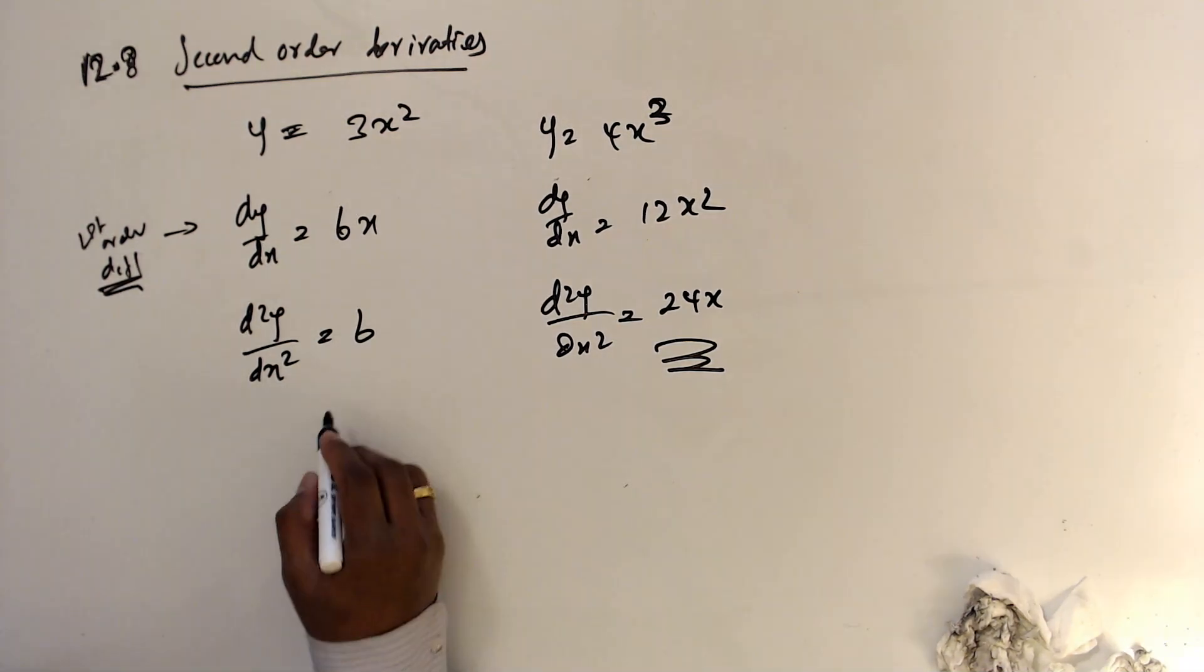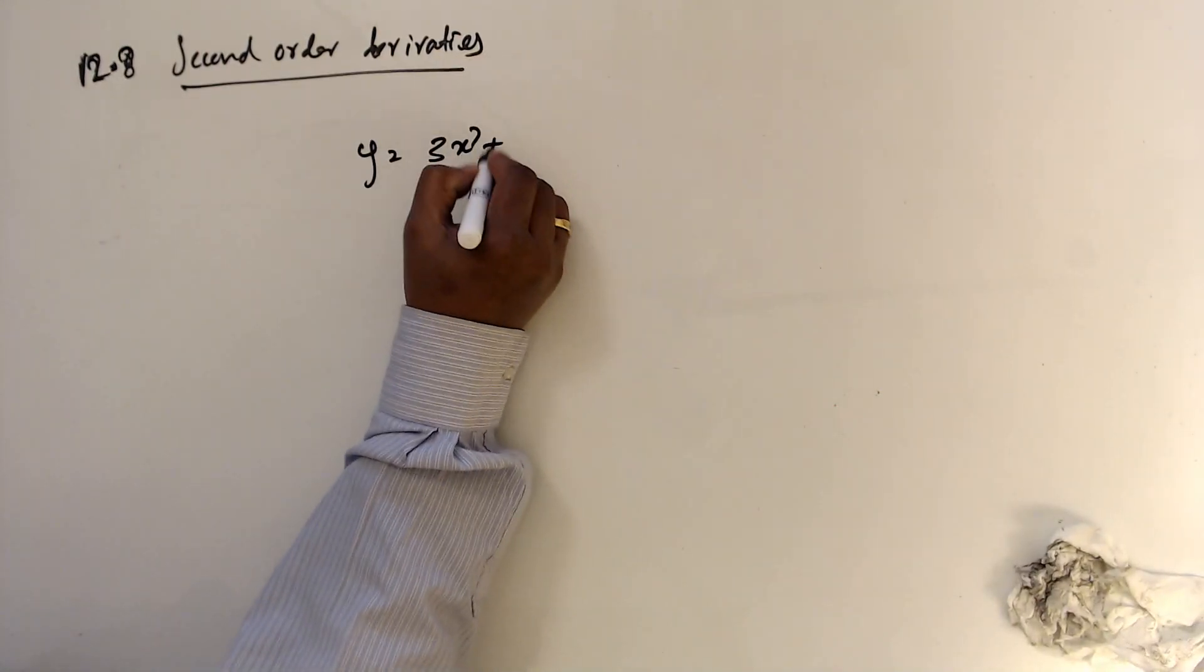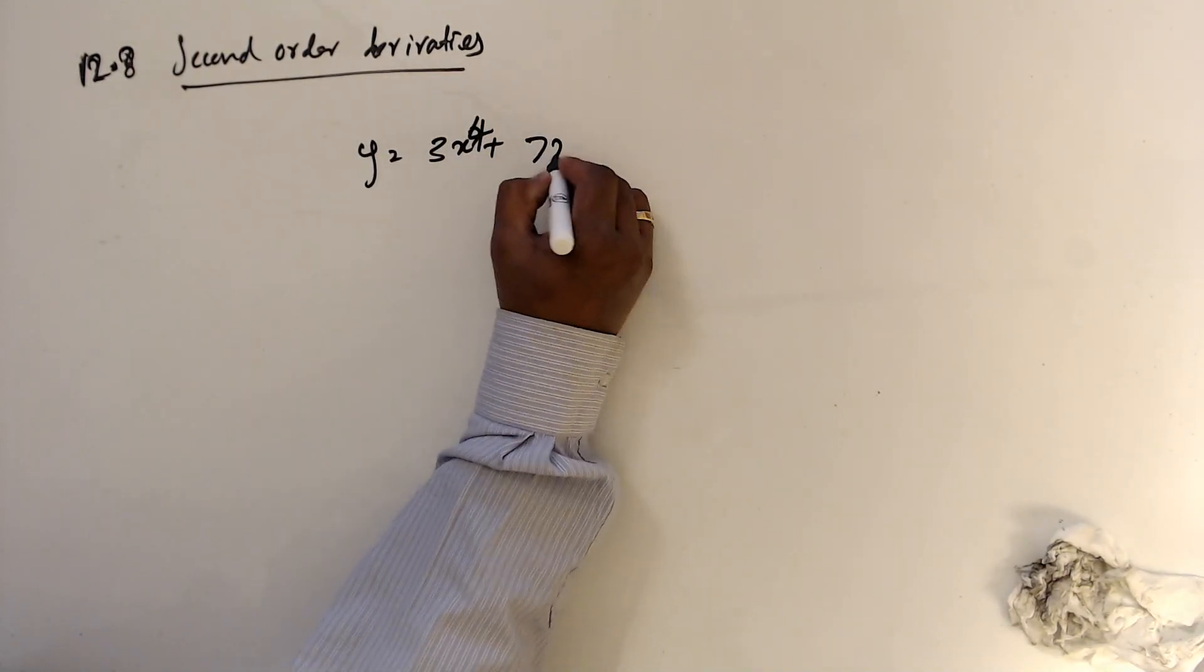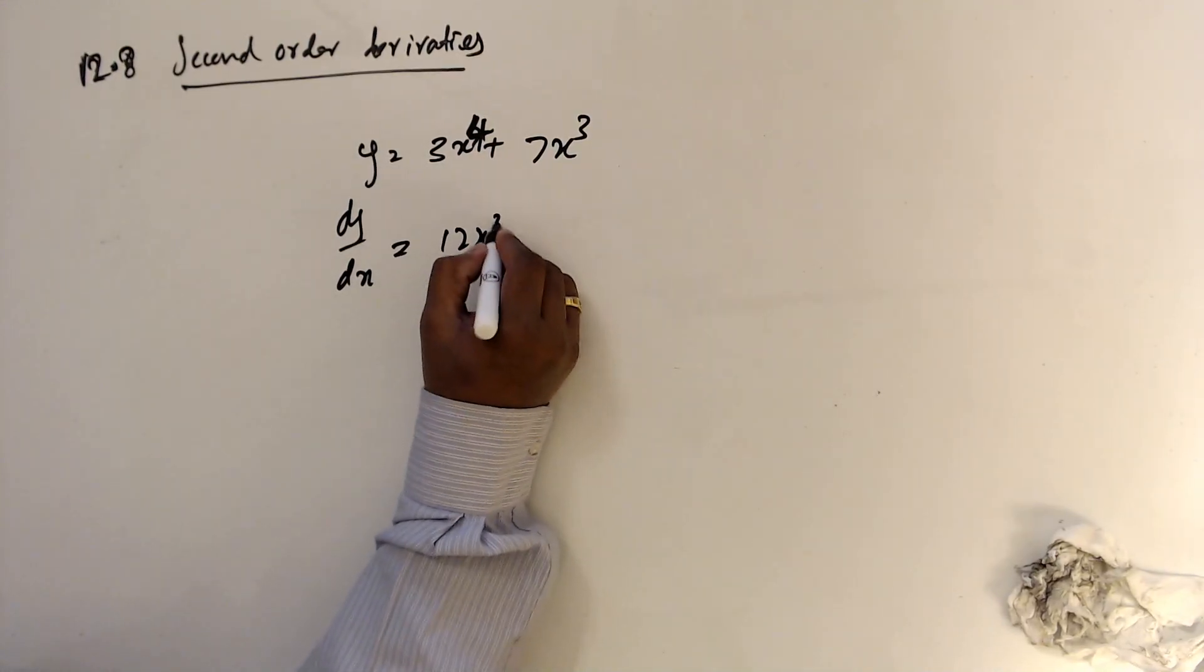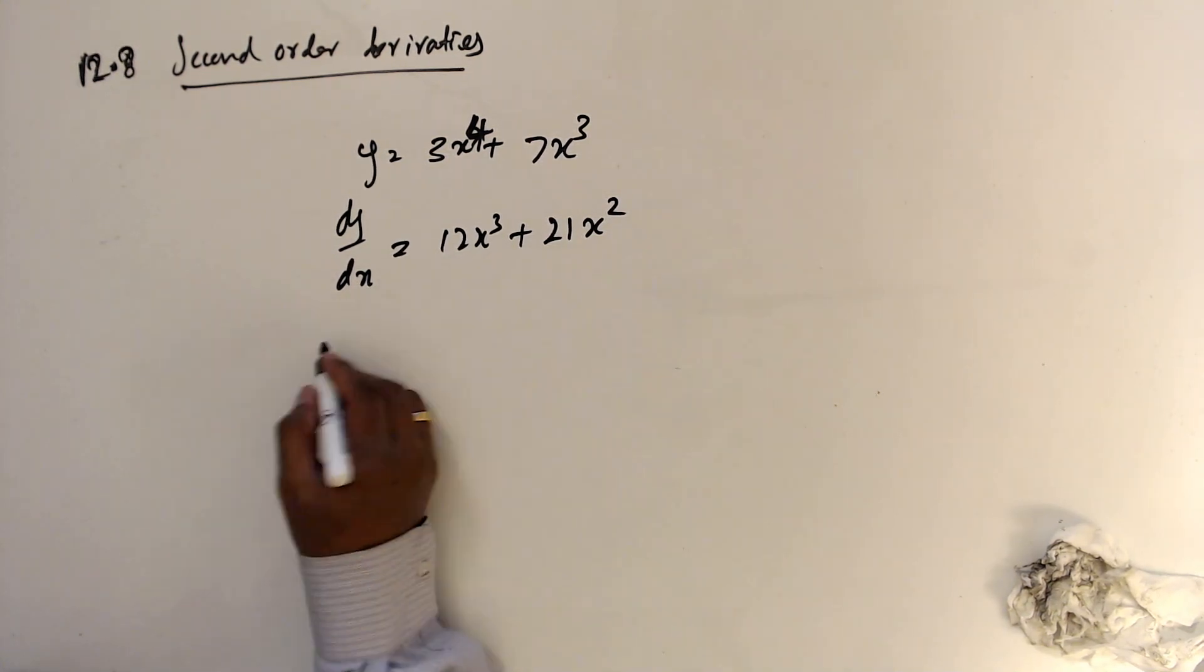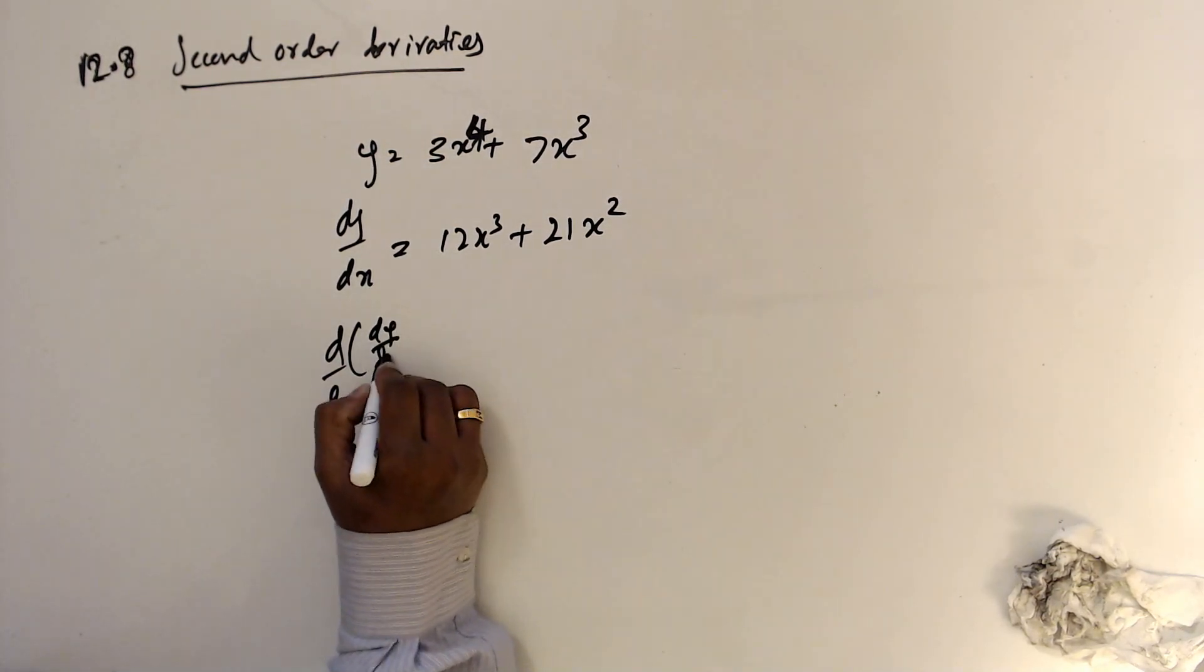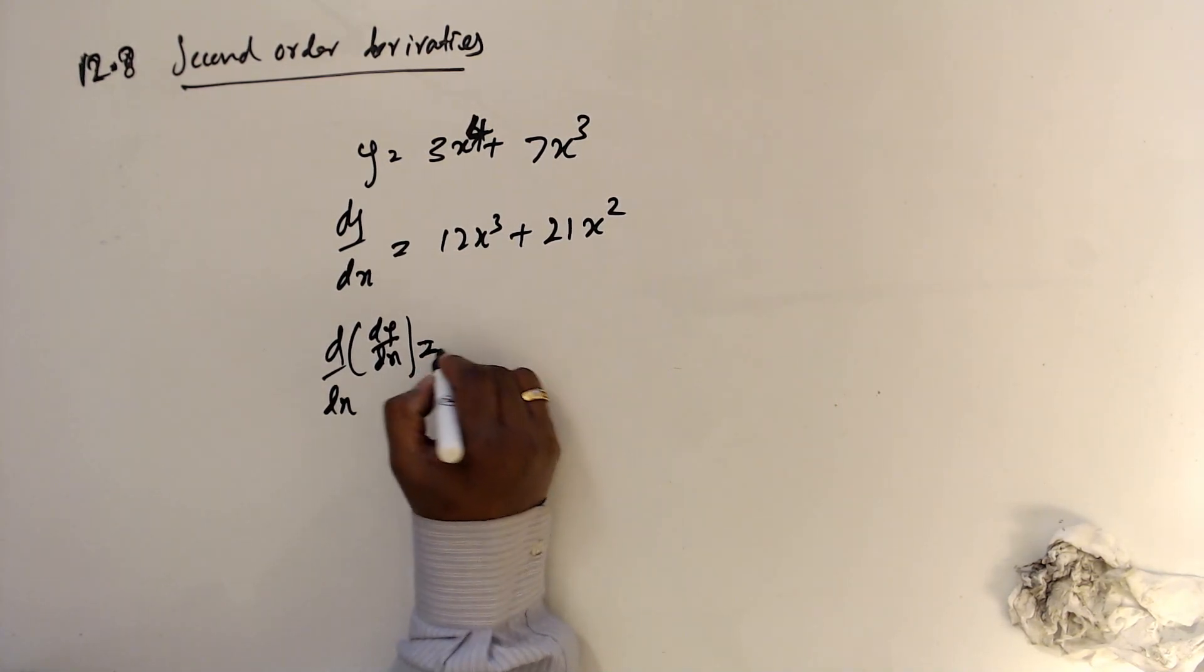Basically you have another one. y equals 3x to the fourth plus 7x cubed. Then dy over dx is 12x cubed plus 21x squared. And then d over dx, one more time differentiate this one.